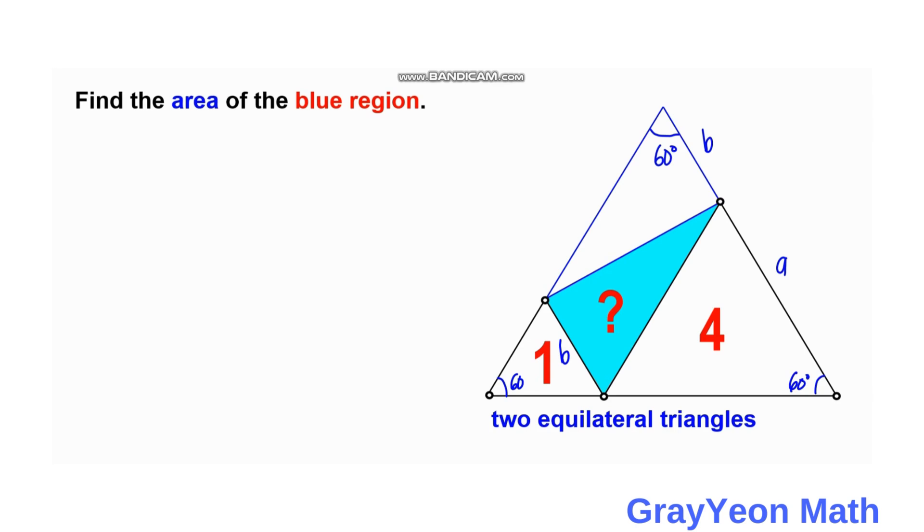We can use the area scale factor. For the larger triangle we have 4, and for the smaller triangle we have 1, which equals the square of the ratio of the lengths. So corresponding to 4 is b, and corresponding to 1 is a, but you need to square this.